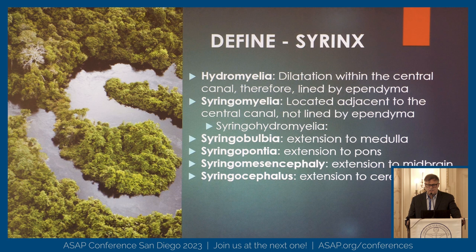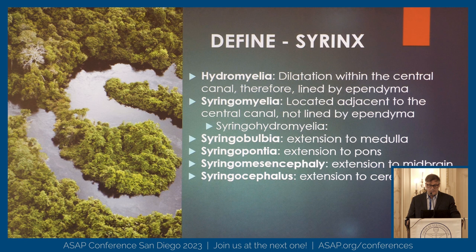I'm going to briefly define the different types of syrinxes that we see. Hydromyelia just means that the central canal lining — the ependymal cells — surrounds the fluid of the syrinx. If it doesn't, then that's syringomyelia. Some people get it all mixed up and just call it syringohydromyelia, so you get a catch term that covers everything.